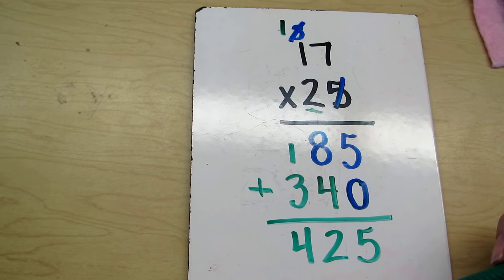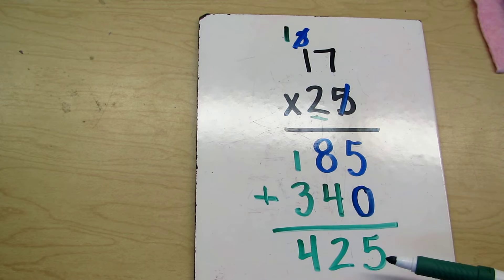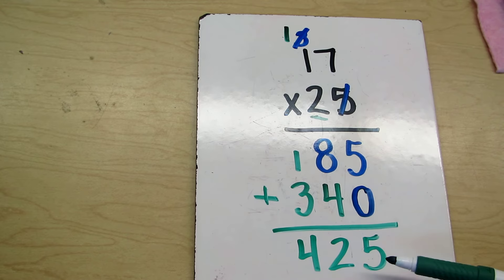And notice that the best way to keep yourself organized is that all the 1s are lined up, all the tens, all the hundreds, because if your work starts going all over the place, then you're not going to be able to line up properly and find the answer. So that is how you do double digit multiplication.